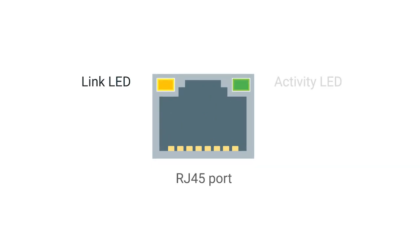Most network ports have two small LEDs. One is the link light and the other is the activity light. The link light will be lit when a cable is properly connected to two devices that are both powered on. The activity light will flash when data is actively transmitted across the cable. A long time ago, the flashing of an activity light corresponded directly to the ones and zeros being sent. Today, computer networks are so fast that the activity light doesn't really communicate much other than whether there's any traffic or not.